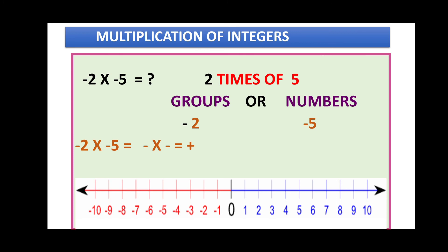Since the result is positive, we move to the right side. Always start from zero. We take five steps: one, two, three, four, five — five numbers completed. Remember: numbers means how many steps and groups means how many jumps. One group is completed.